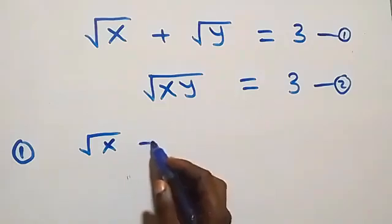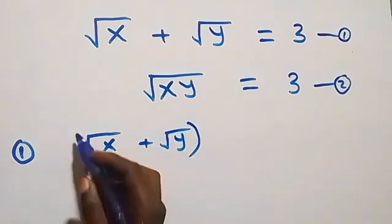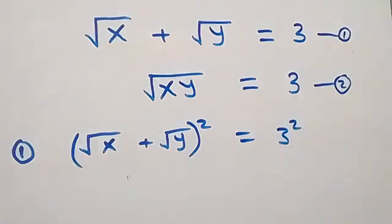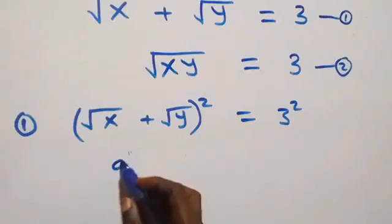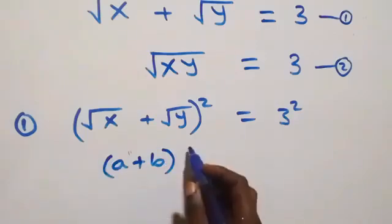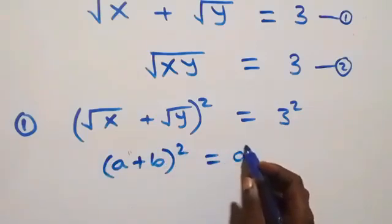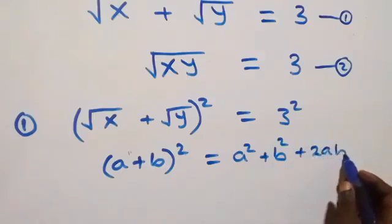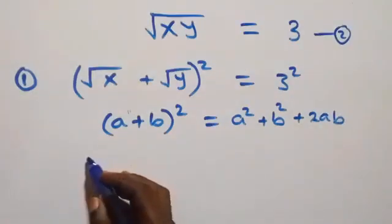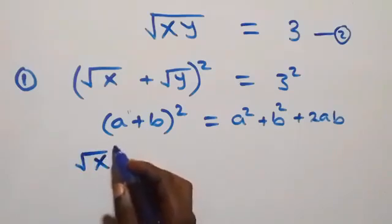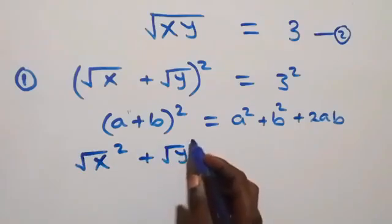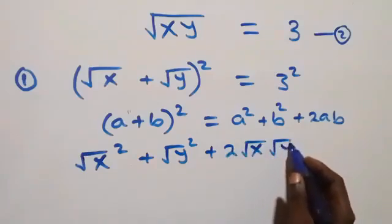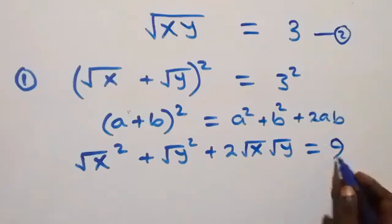Squaring both sides of equation one: (√x + √y)² = 3². The expansion follows from (a + b)² = a² + b² + 2ab, so this becomes (√x)² + (√y)² + 2 times √x times √y, which equals 3 squared, that is 9.